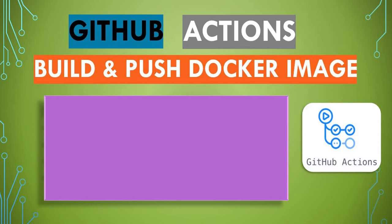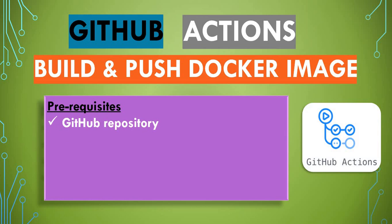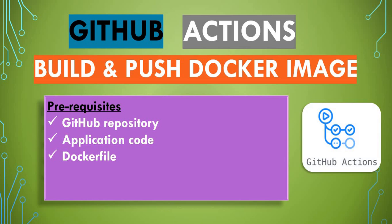Before getting started, there are some prerequisites for completing the setup. You need to have a GitHub login and a repository for your application. If you don't have one, you can create one, clone my project, or fork it from my public GitHub repository — I'll link it in the video description. You also need to have an application — in our case, we're going to use a simple Node.js web application.